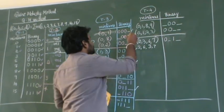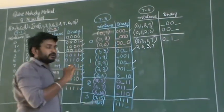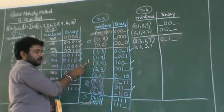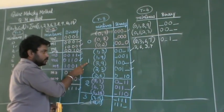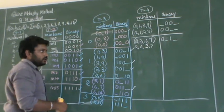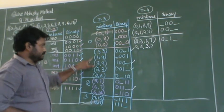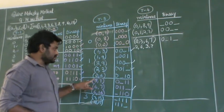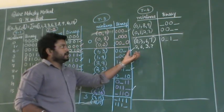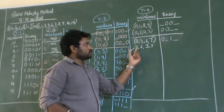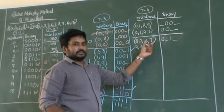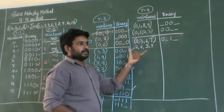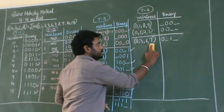Now, I have to compare the minterms present in group 1 and group 2, which I have already done in the previous video. 2637 is also possible, but I should not write this because 2637 is already present in the above minterm. So therefore, I should not write this.